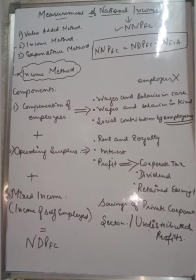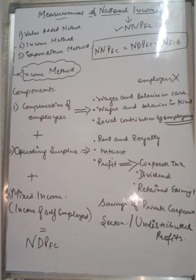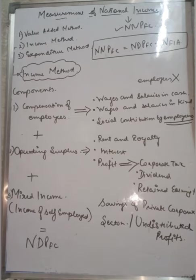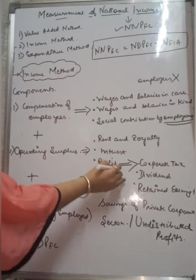Royalty relates to intangible assets — for example, if I have patented a process or idea and I give someone the right to use that patent, I receive royalty in return. Examples include internet copyrights. Interest is earned when you invest capital. Profit is what entrepreneurs earn after taking on risk and setting up a business.